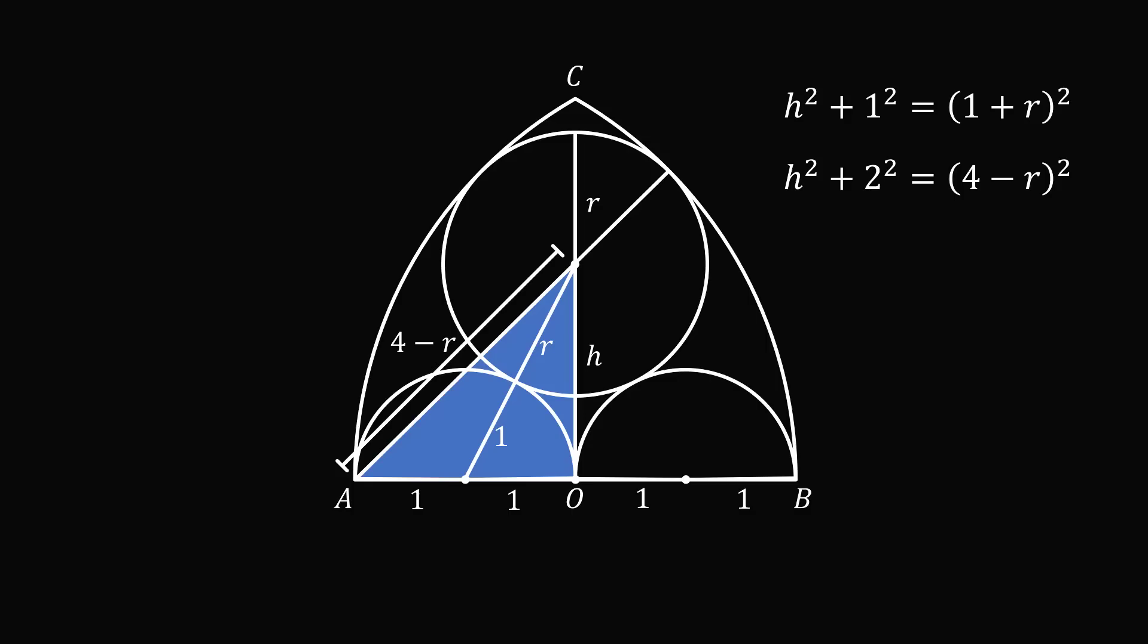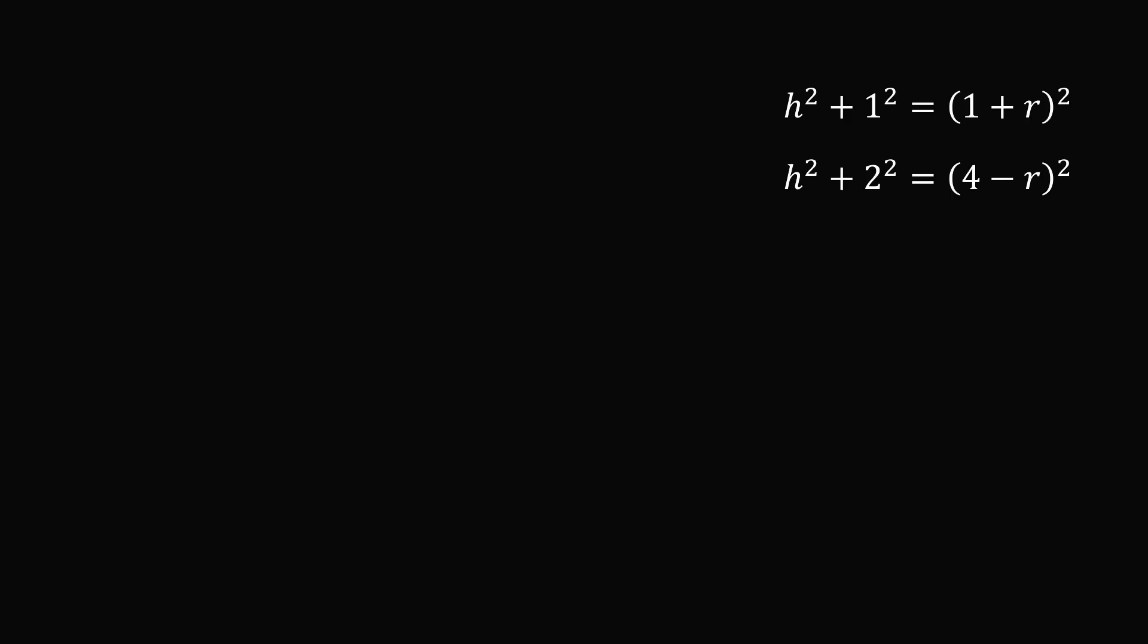All that remains is to solve for R. So let's focus on these equations. Now the nice thing about this system of equations is we don't have to solve for H and R. We have an H squared in both equations, so we can just eliminate the H variable and solve directly for R. So let's subtract the second equation from the first equation.